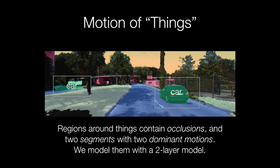Things are regions that move independently, like cars, people, or horses. These regions contain occlusions and two segments with two dominant motions. We model these with a two-layer model, and we call it localized layers.